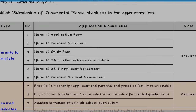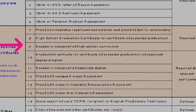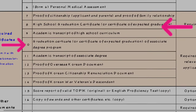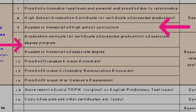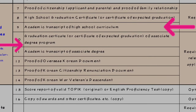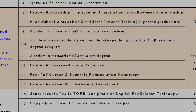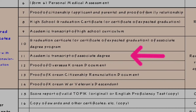Form number seven includes proof of citizenship for the applicant and parents, and proof of family relationship. After that, you add your high school graduation certificate and academic transcript and mark sheets. Items seven through nine are clear. For items ten through fourteen, some applicants are required to submit an associate degree. You also have to apply proof of overseas Korean documents. If you are not submitting a particular document, you have to note that in the checklist.